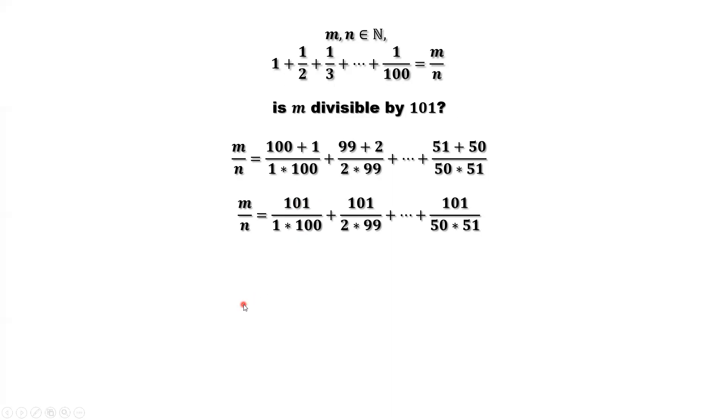The next thing we want to do is to get rid of all denominators from both left-hand side and the right-hand side. The denominator from the left-hand side is n. The common denominator of the right-hand side is 100 factorial. Why is 100 factorial?